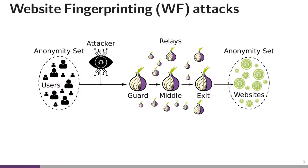Since Tor is an anonymity network, the literature is filled with a wide range of different attacks on Tor, and of course Tor's design aims to mitigate a lot of them. One particular type of attack is a website fingerprinting attack, in which a local passive attacker — such as your internet service provider, your router, or your network interface card — looks at the encrypted traffic from your Tor Browser as it enters the Tor network, and based on patterns in this encrypted traffic, tries to determine which website you're visiting, just based on the encrypted patterns.